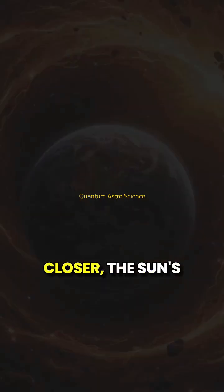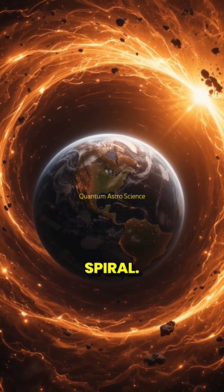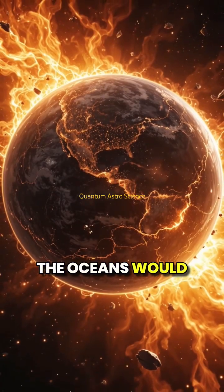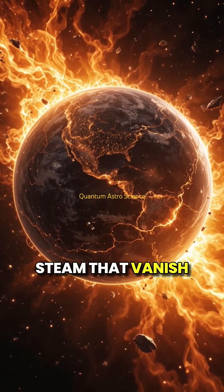As earth got closer, the sun's gravity would pull harder and harder, dragging our planet into a fiery death spiral. Within days, the atmosphere would be ripped away, the oceans would boil, turning into giant clouds of steam that vanish into space.